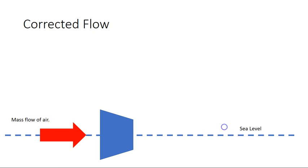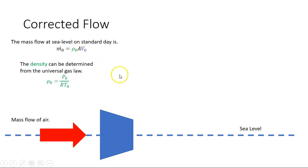Well, to start, let's look at what the mass would be at sea level. Mass flow is just ρAV, where ρ is the density, and from the universal gas law is just the pressure at sea level over the universal gas constant R times the temperature at sea level.